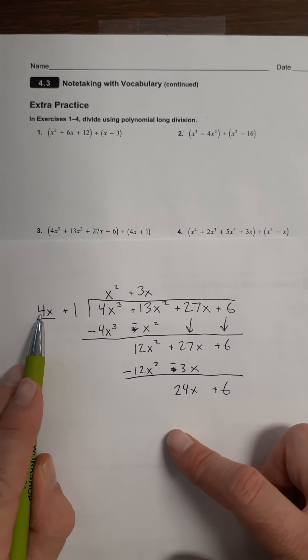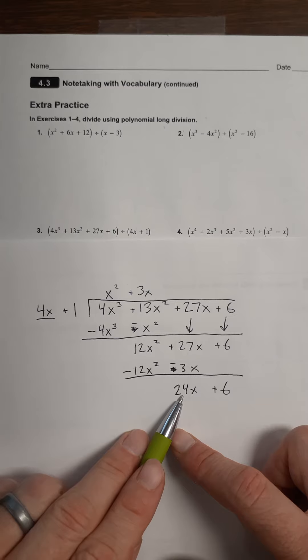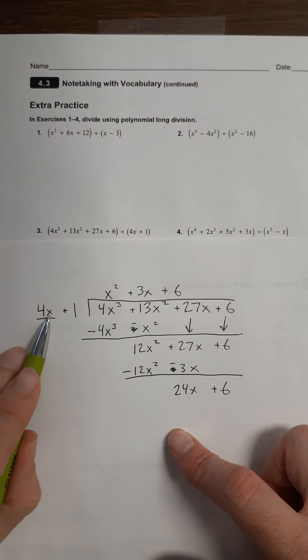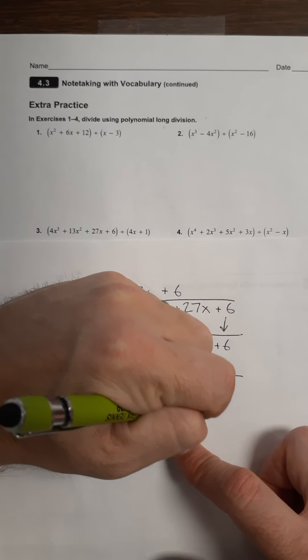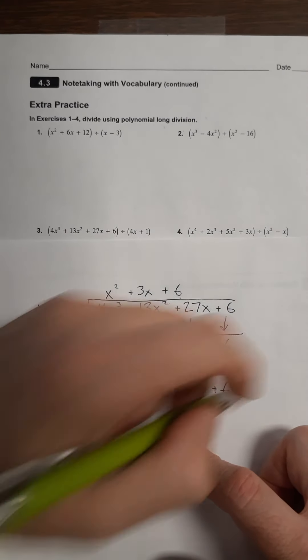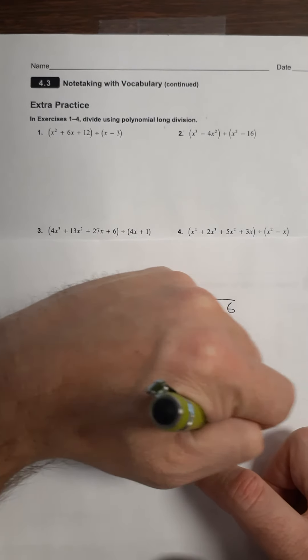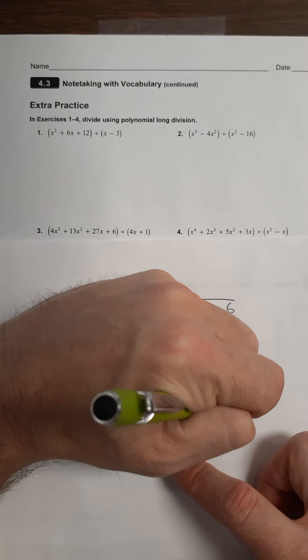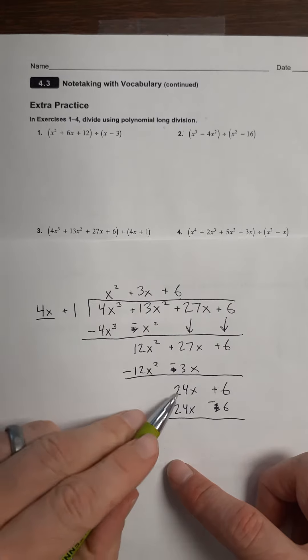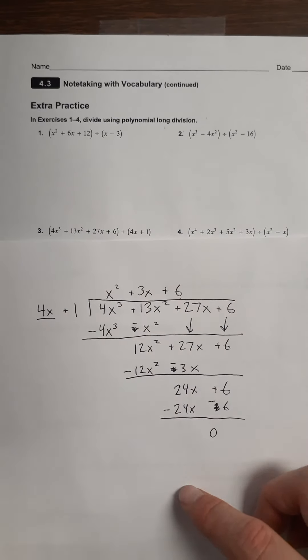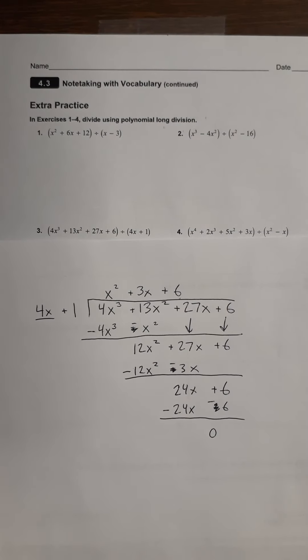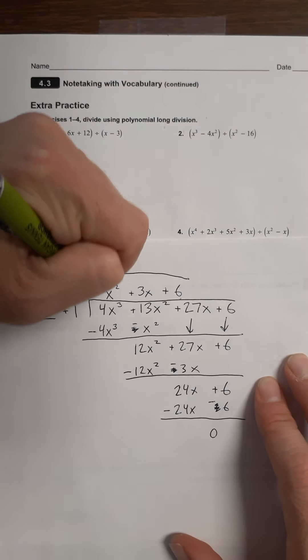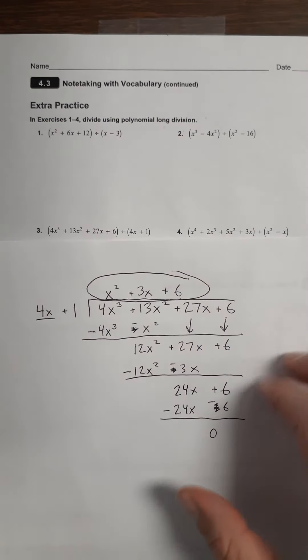What do I have to multiply this by to turn it into that? The answer is 6. That's 24x. 1 times 6 is 6. Hey, look at this. So now when I change the signs, these cancel out, these all cancel out. So this is what it looks like when there is not a remainder. So this one just worked out perfectly. No remainder.